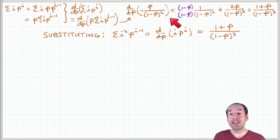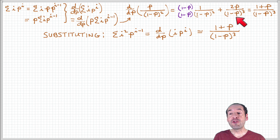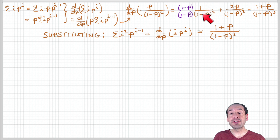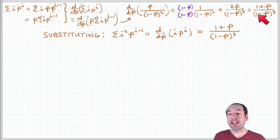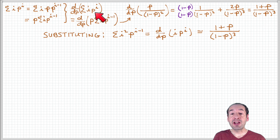We use the product rule to take that derivative. The derivative of p holding the denominator constant gives 1/(1-p)². The second term gives 2p/(1-p)³. Multiplying the top and bottom of the first term by (1-p) to get a common denominator of (1-p)³, and adding the two terms, we end up with (1+p)/(1-p)³.